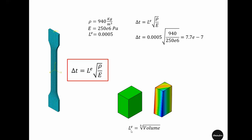Another way of finding the characteristic length is to divide the volume by the area of the maximum side. For example, as we pull a particular element, you can understand the volume has decreased, and as a result the characteristic length decreases as the simulation progresses.